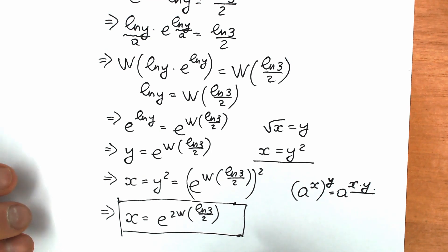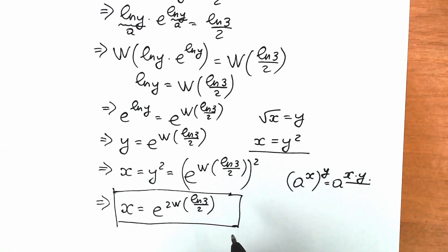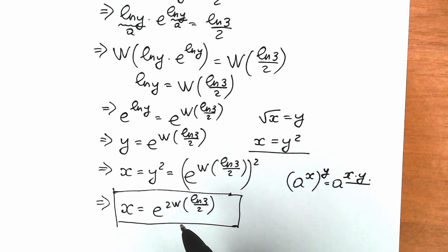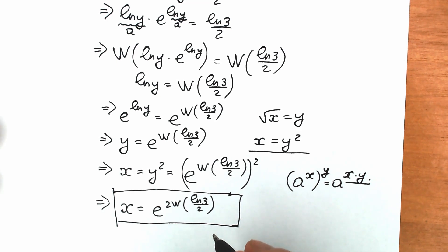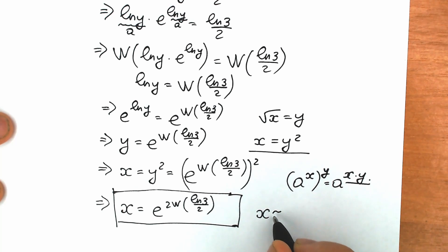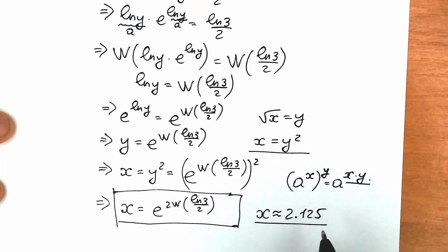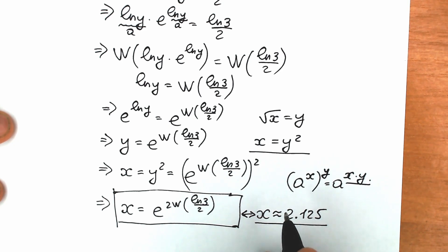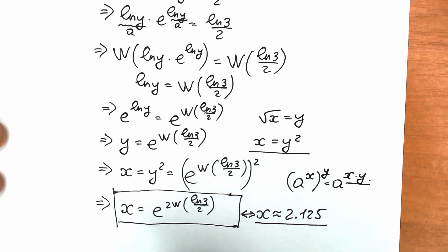I also found the approximate value because a lot of students don't like this complicated answer. A lot of students prefer when the answer is x equal to 2, 3, 10, or 20. But for mathematicians this is a great answer. So x is approximately equal to 2.125. This is our approximate value for the Lambert W function expression, and for mathematicians this exact form is absolutely a great answer.